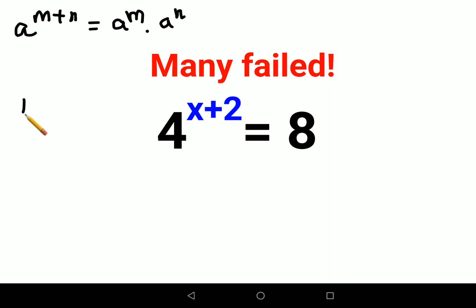So now this looks like 4 raised to x into 4 raised to 2 equals to 8. This is 4 raised to x into 16 equals to 8. Now in order to find the value of x, you will divide or try to shift as many numbers as possible on this side.